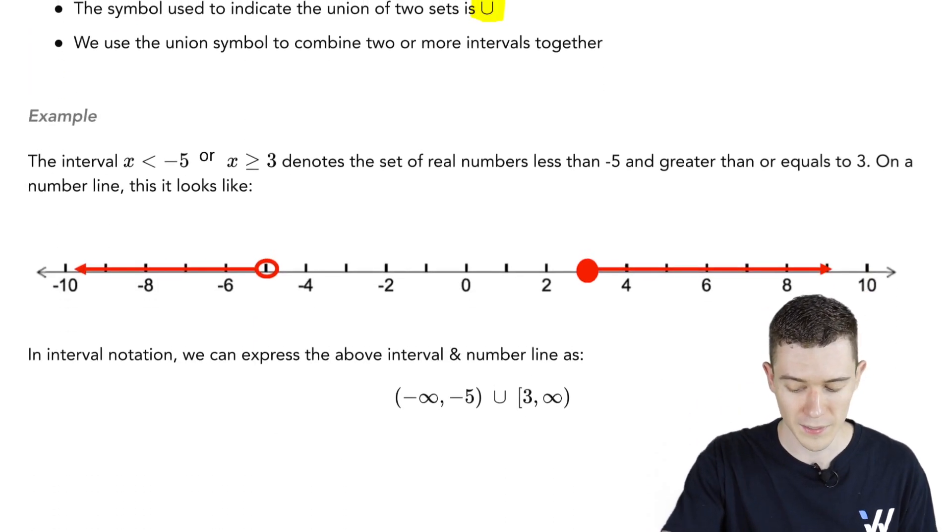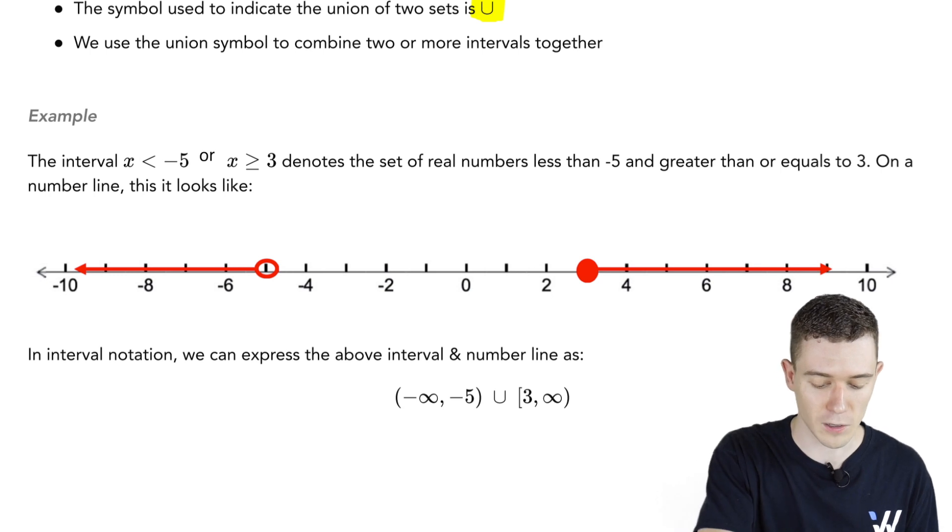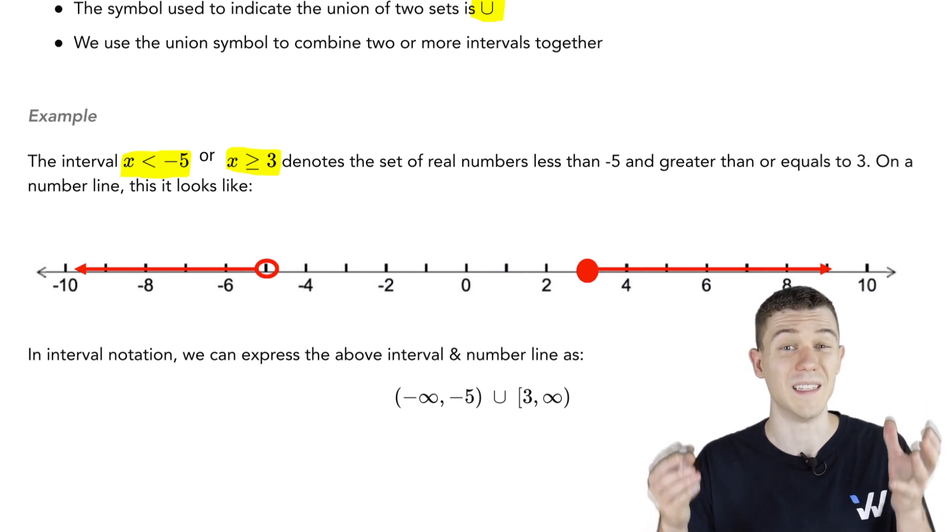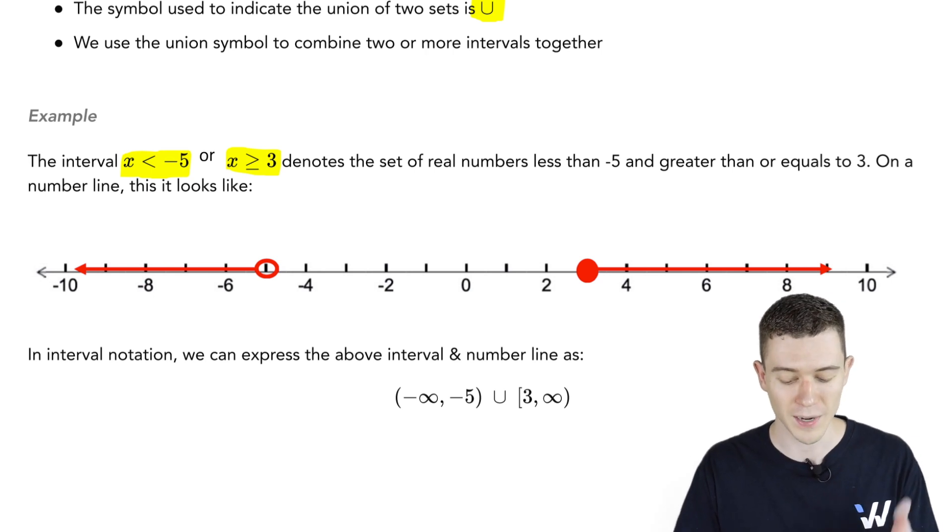Here's a quick example. Take X less than or equal to negative 5, or X greater than or equal to 3. You can see both of these intervals on the number line. And if we wanted to describe them together, we would write those in interval notation and put that U for union in between.